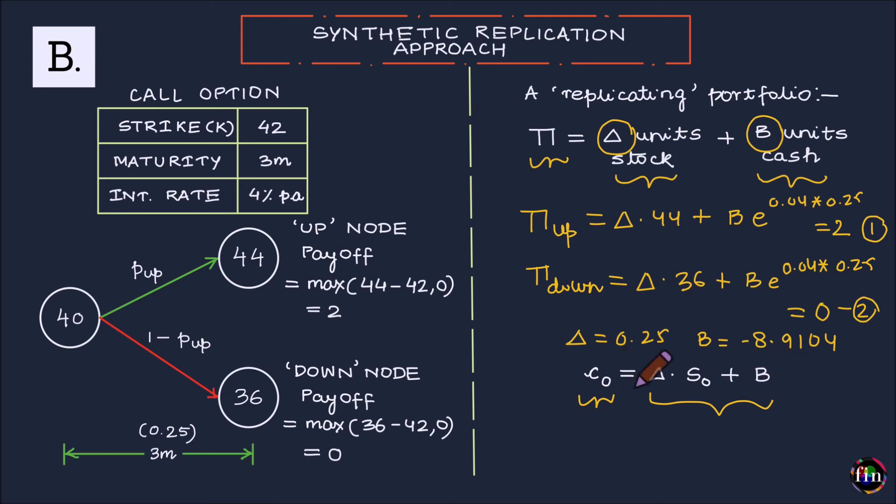This is the equation which will help us arrive at the fair C0. I hope you are able to rationalize this, that this is indeed the cost that it takes for you to set up your replicating portfolio as of today. This is the cost of entering into the long position in delta units of the stock and this is the borrowing that you have entered into.